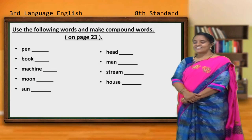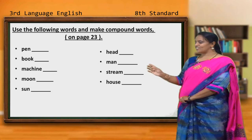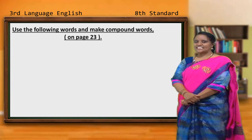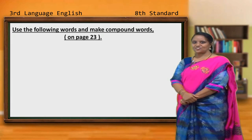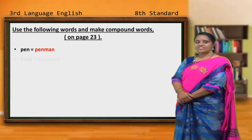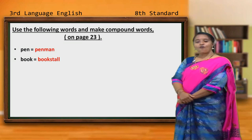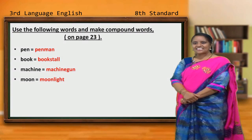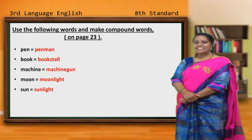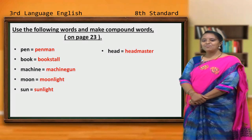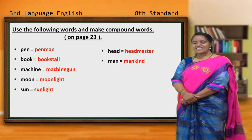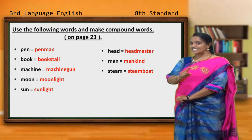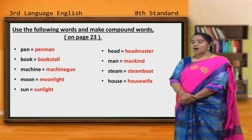There is a mistake — the word 'stream' should be 'steam'. Let's manage, no issue. I think you have done the work. Pen — penman. Book — bookstall. Machine — machine gun. Moon — moonlight. Sun — sunlight. Head — headmaster. Man — mankind. Steam — steamboat. House — housewife.